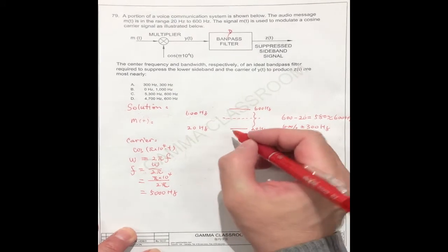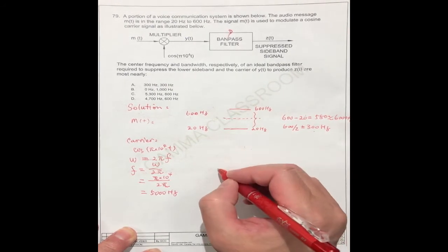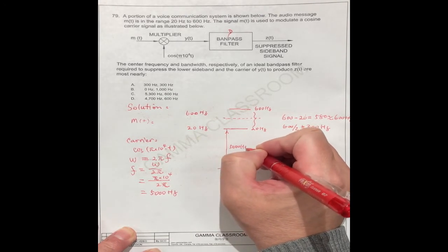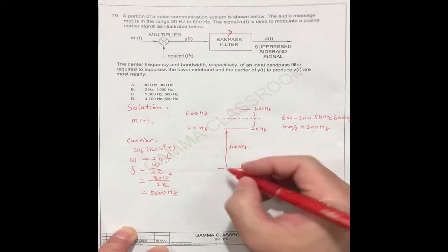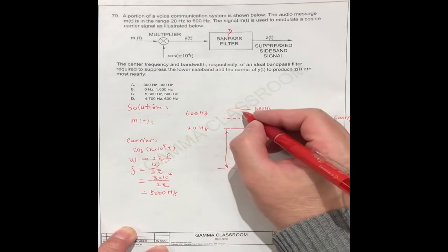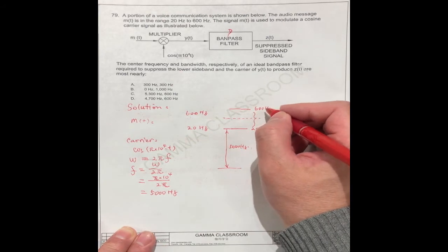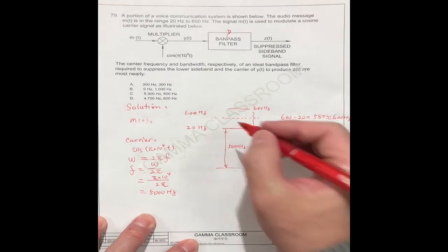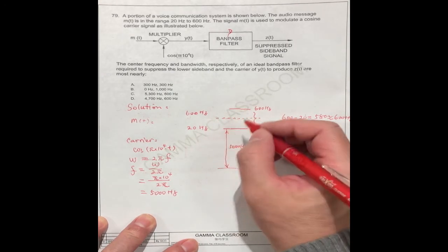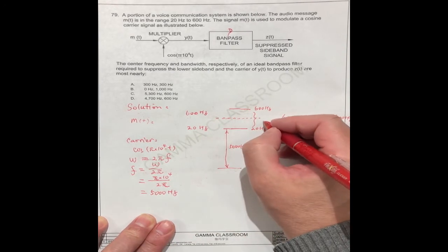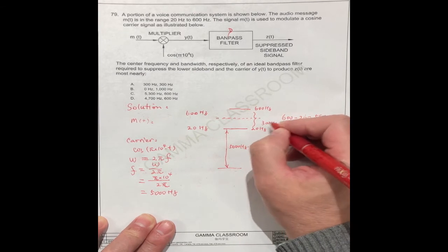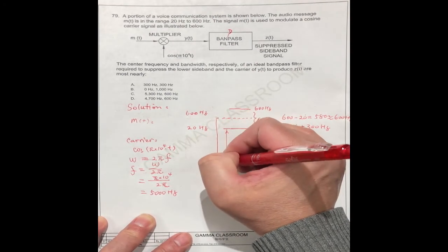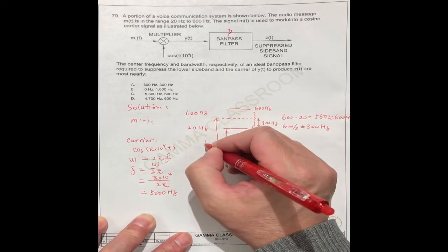So the carrier here, we put together from here. This is 5000 hertz. This carrier, the maximum is 5600, the minimum is 5020. So the center should be here, 5000 plus 300. This is 300 hertz here, just this distance. So this should be 5300.